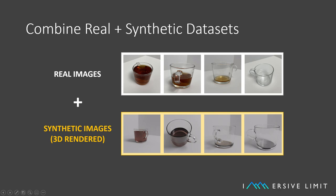One cool thing is that you can actually combine synthetic datasets with real datasets for even better results. In this example, I have a number of 3D rendered teacups with tea in them and their real photo equivalents. We could add these datasets together and get a much stronger, much more representative dataset of what this AI is going to have to detect in the real world.